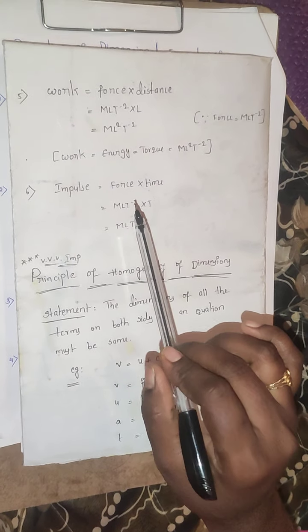Next is force. Force equals mass into acceleration. Mass is represented by capital M. Acceleration dimensional formula is L into T to the power of minus 2. So the dimensional formula of force is M, L, T to the power of minus 2 — that is MLT⁻².